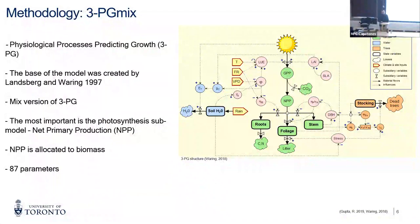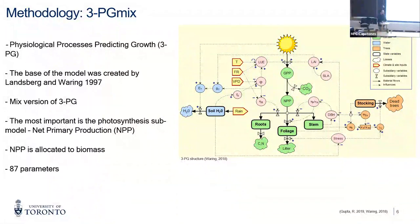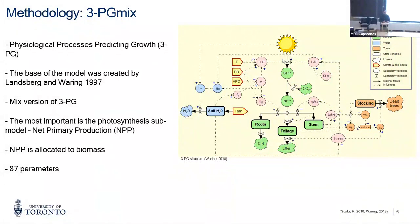So, we have the 3PG model here. It is a physiological process predicting growth model. Initially it was designed in 1997, focusing on NPP and the allocation of this to the root system, foliage, and stem — basically calculating photosynthesis and allocating this into biomass, so carbon. We are using a mixed version of 3PG, which is great because we can use more than one species; the original was just one species. Also, you can model an uneven-aged situation — you can enter information with more than one age in the model.